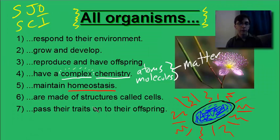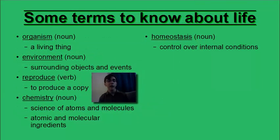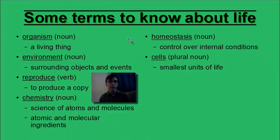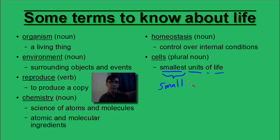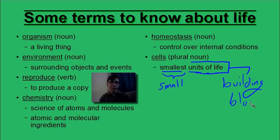Next, we'll see that all living things are made of structures called cells. But what is a cell? A cell is the smallest unit of life. Cells are small, but what is a unit of life? We can think of this in terms of building blocks — a cell is a building block of life. All living things have to have at least one cell. Some living things have more than one cell, but the bare minimum is one building block of life, or one cell.